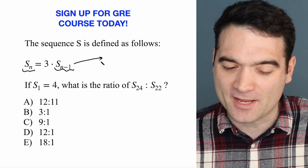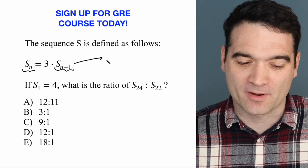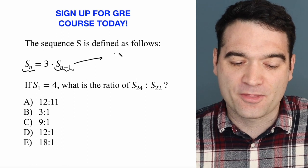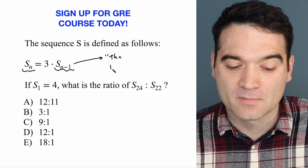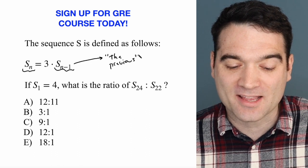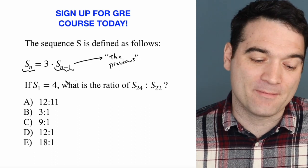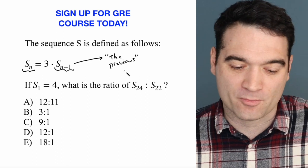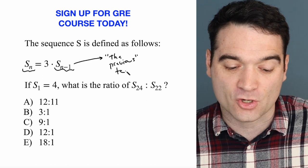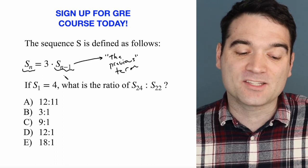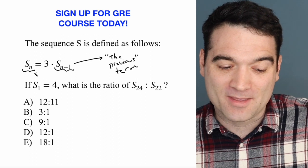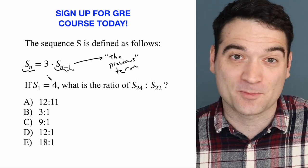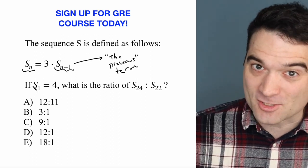That's a little shorthand you can always remember: the previous term is the same thing as S sub n minus 1. So that means I take the previous term, multiply it by 3, and I get the next term.